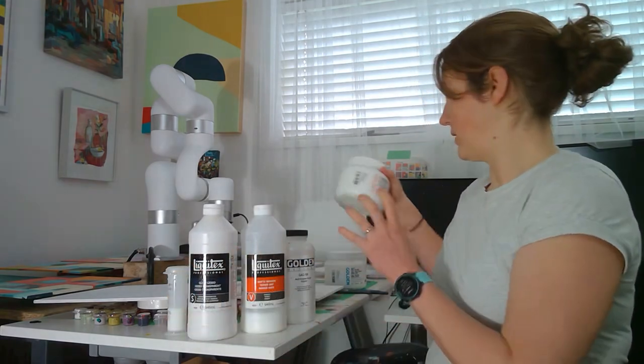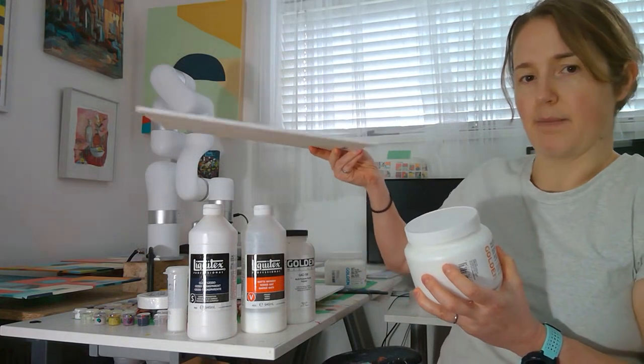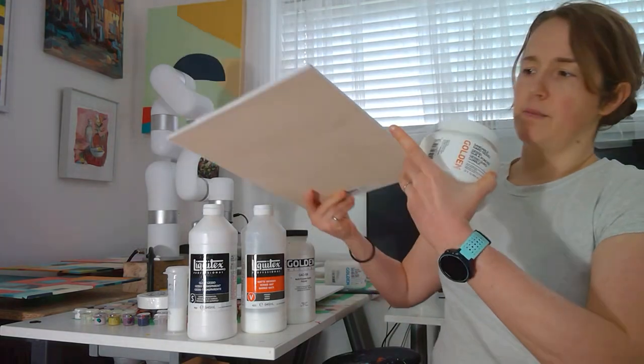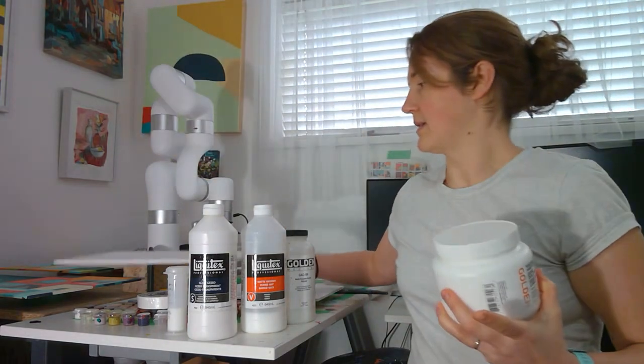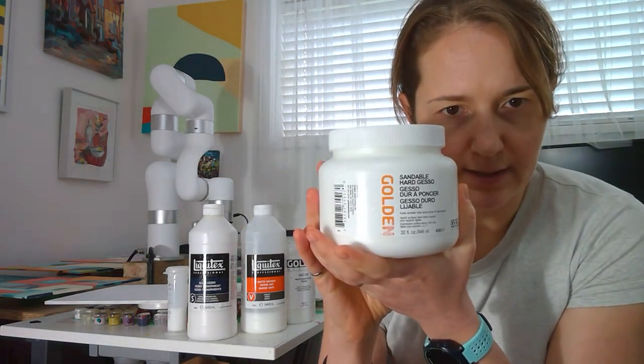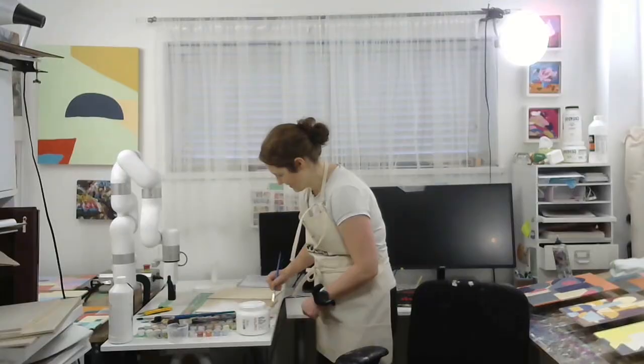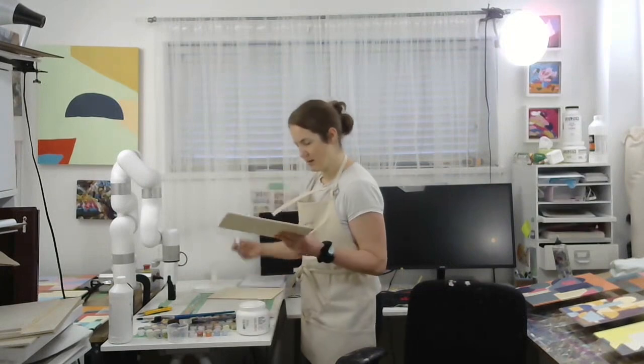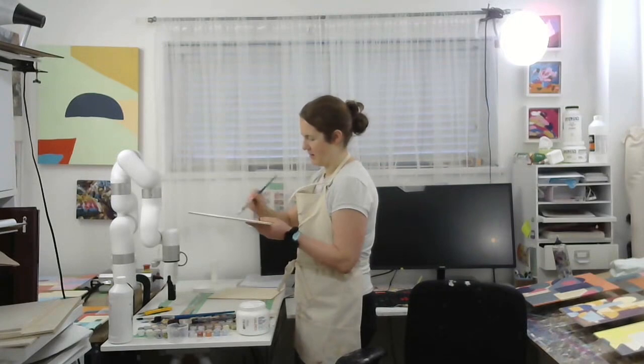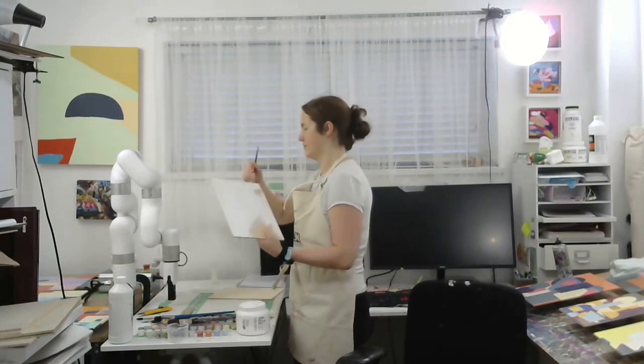Now the other one you'll see me doing is white gesso on these smaller boards. Because I end up mounting these—and that's in another video—I mount these to different panels. I don't mind the edges being covered with white because then I just have the painting go around the edges. I like this Golden brand gesso because it's sandable, so I can add more layers and I can make it super smooth.